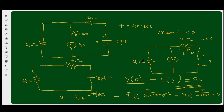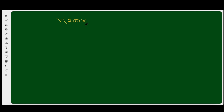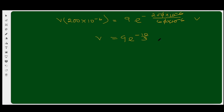To find the voltage at t = 200 microseconds, substitute t = 200 × 10⁻⁶ into the expression: v(200 × 10⁻⁶) = 9 · e^(−200×10⁻⁶ / 60×10⁻⁶) = 9 · e^(−10/3). This gives approximately 321.1 × 10⁻³ volts, or 321.1 millivolts. Very straightforward.